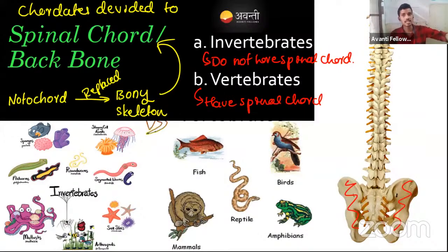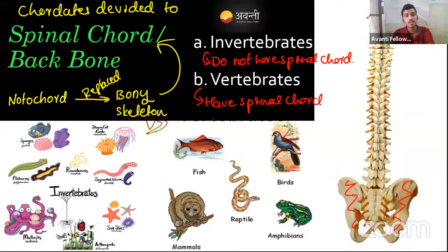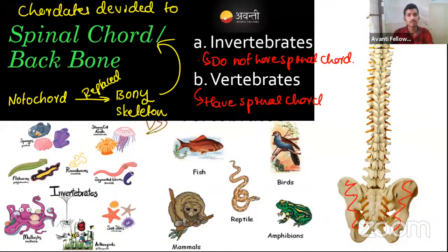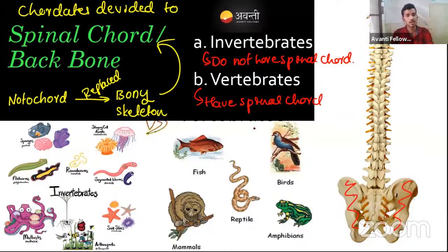All vertebrates are chordates — correct — because vertebra means it should develop from the notochord. But all chordates are not vertebrates, because chordates also include invertebrates like hemichordates and cephalochordates. That's about the spinal cord — any more questions?